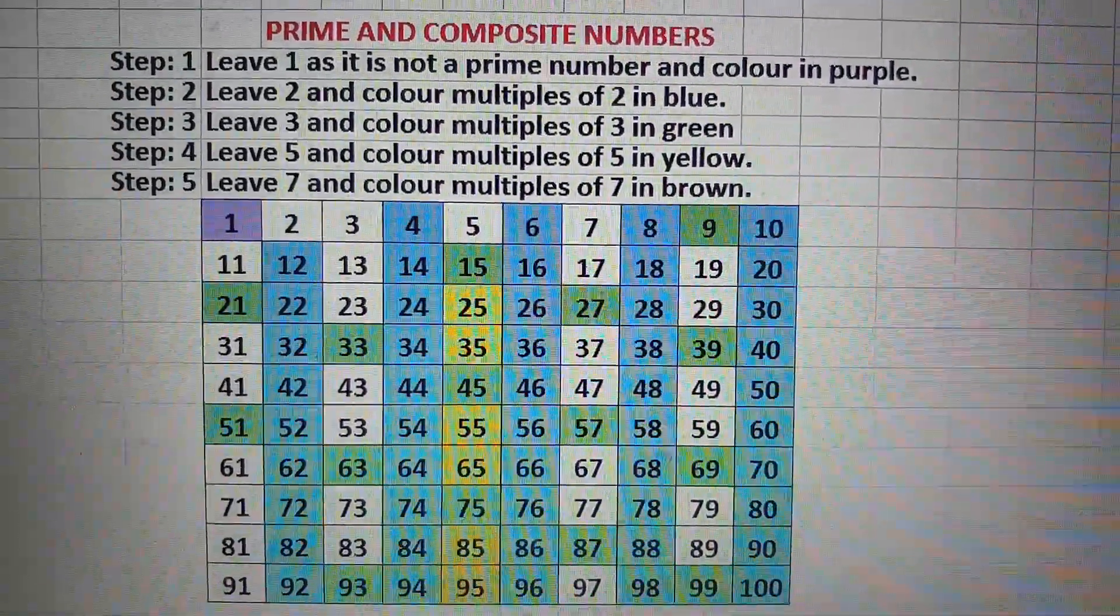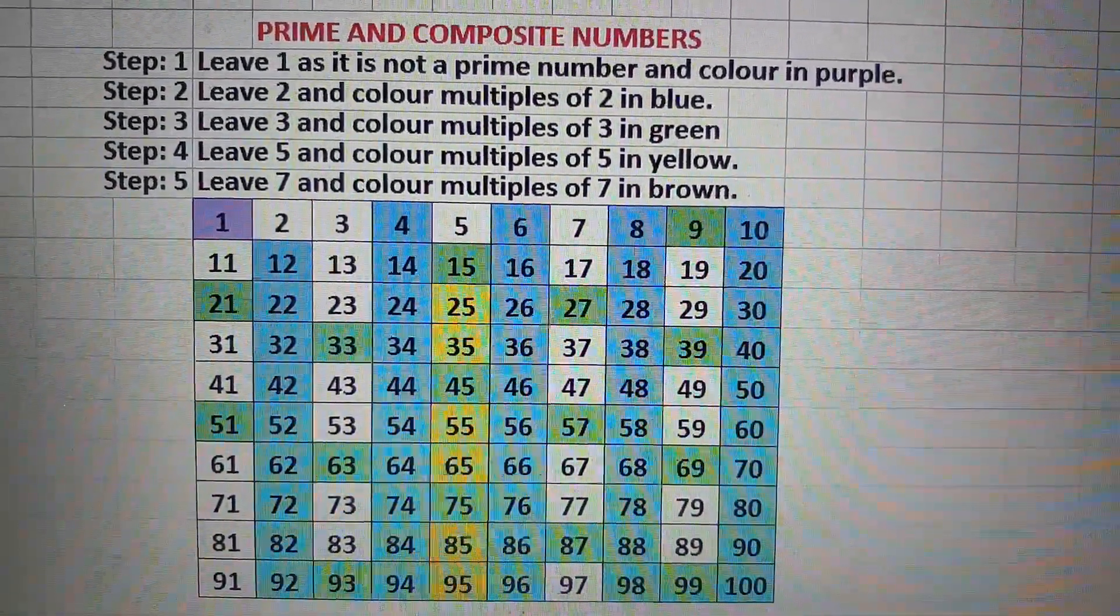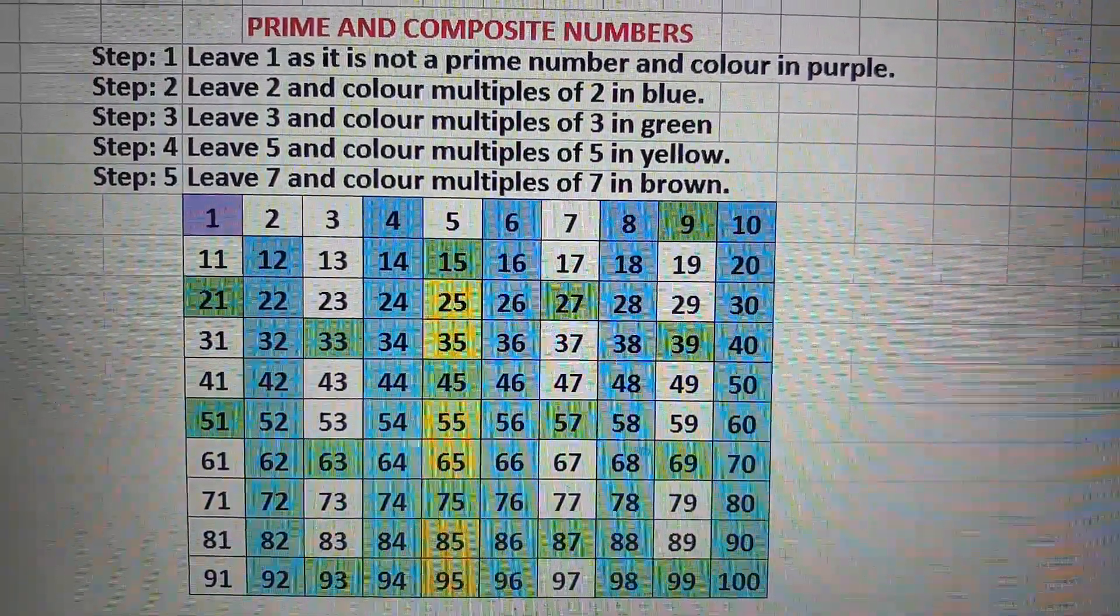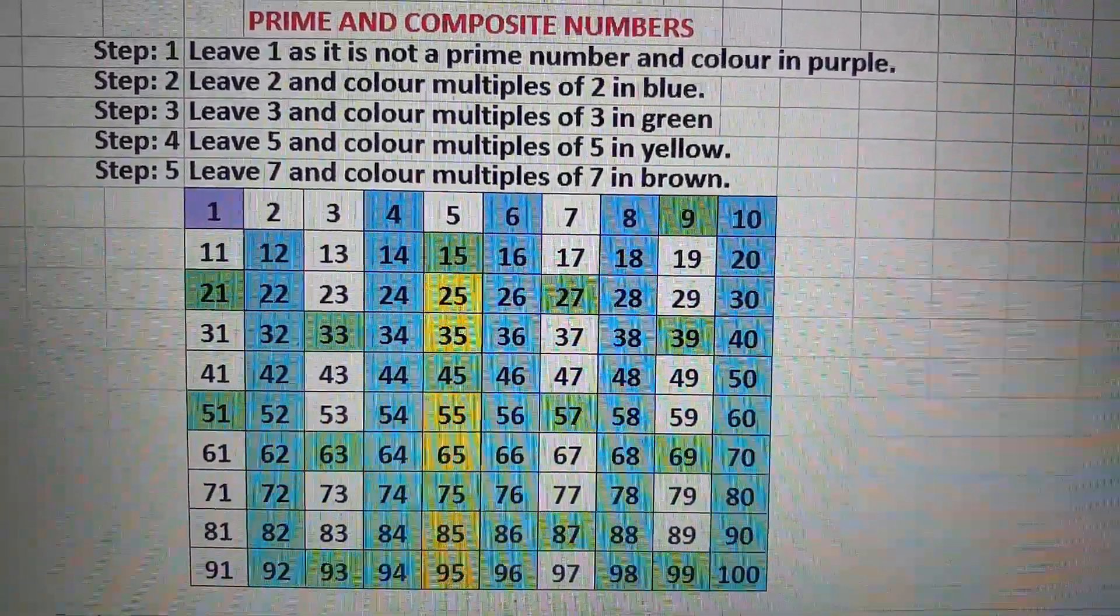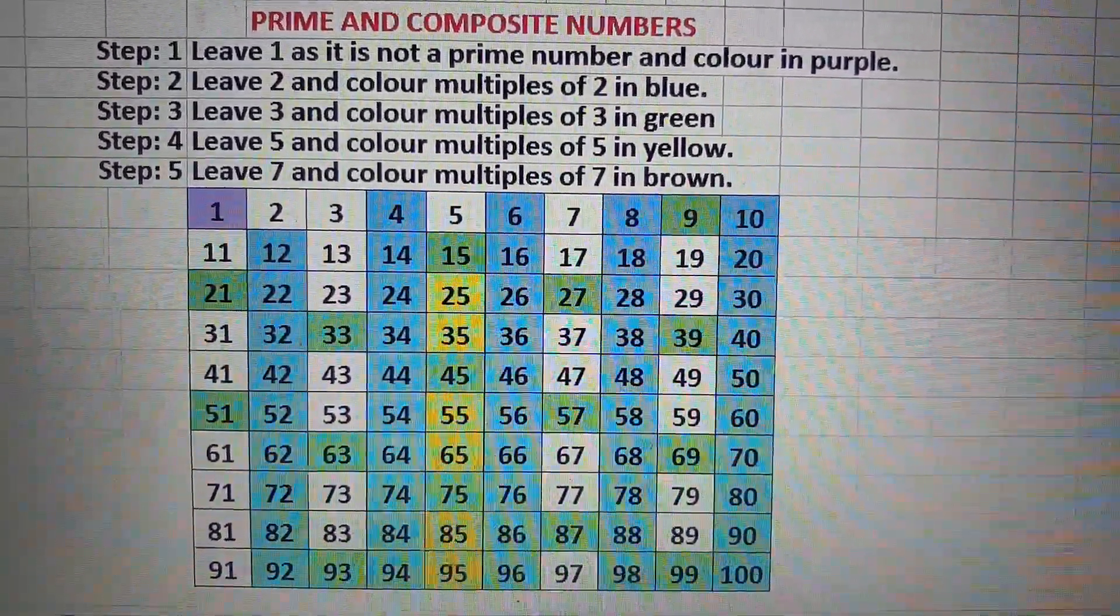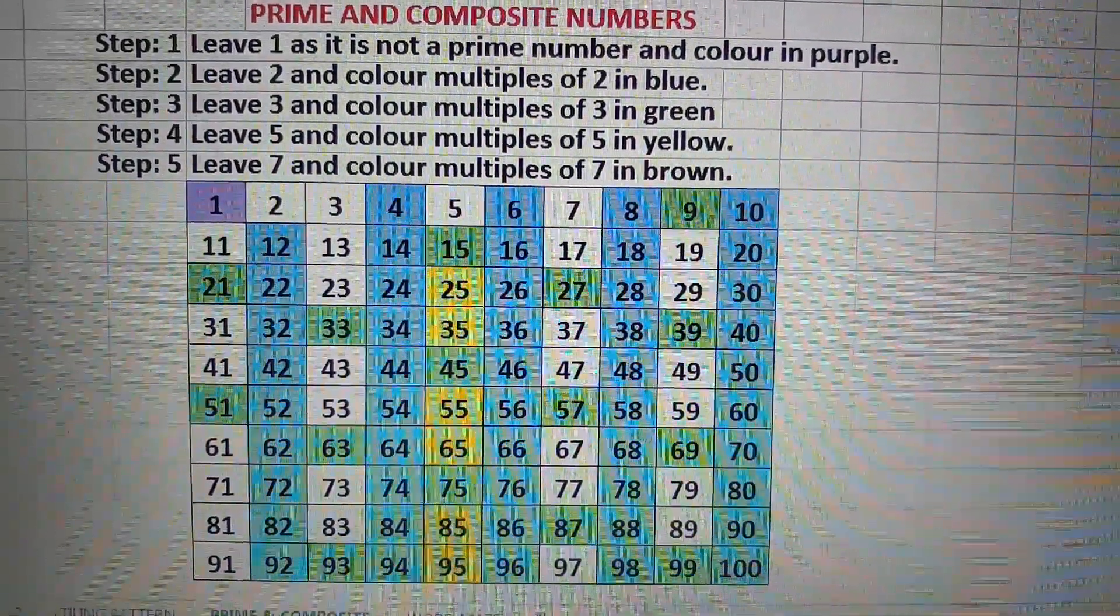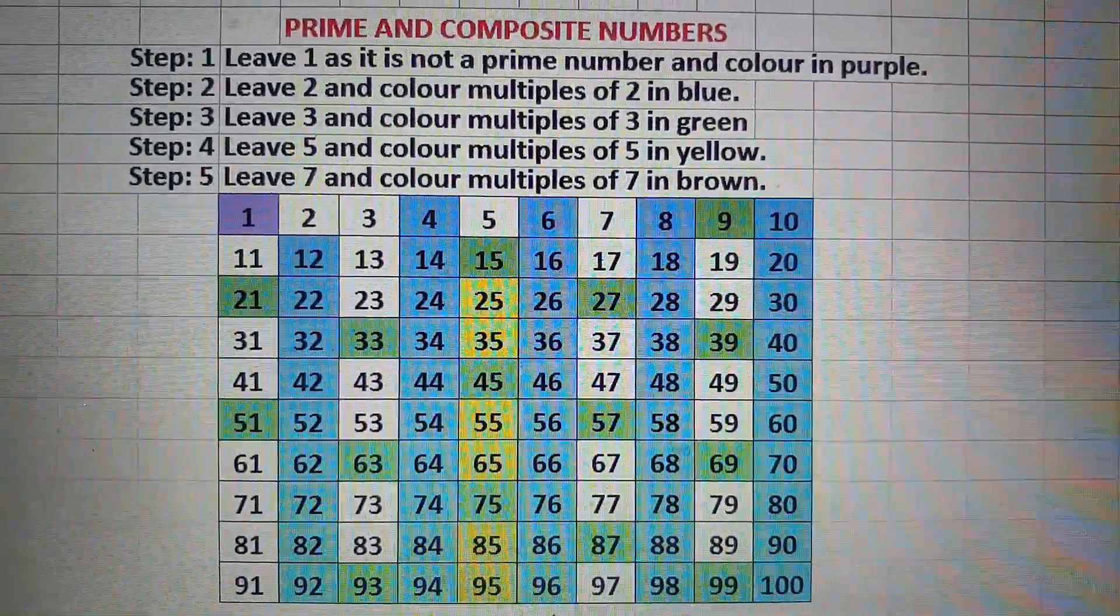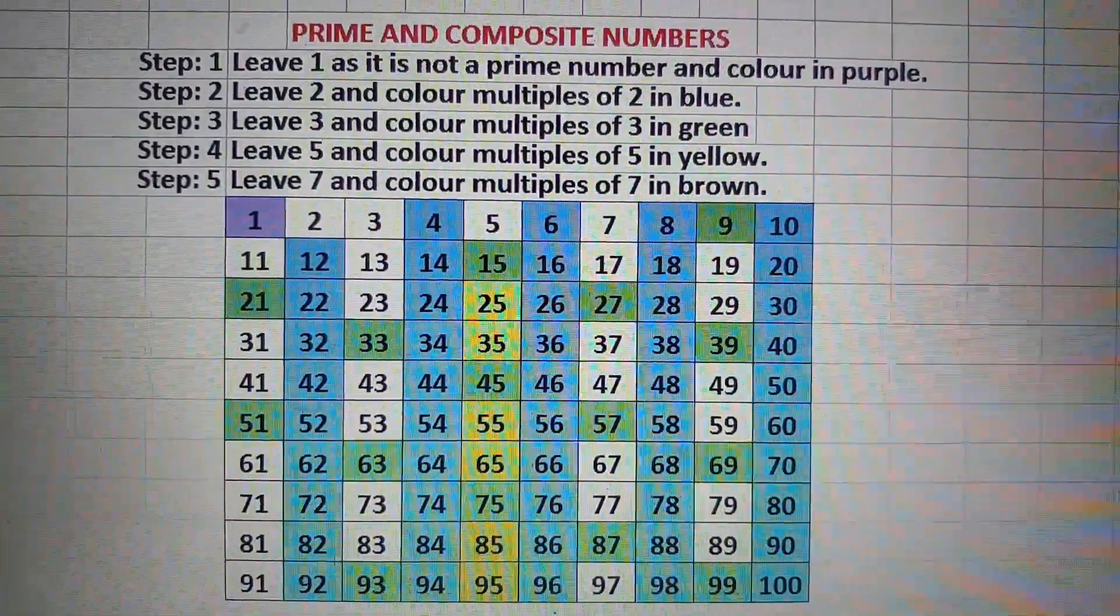Step 5: leave 7 and color multiples of 7 in brown. Multiples of 7 are 14, 21, 28, 35, 42, 49. But the numbers that we have already colored, we will not color again.